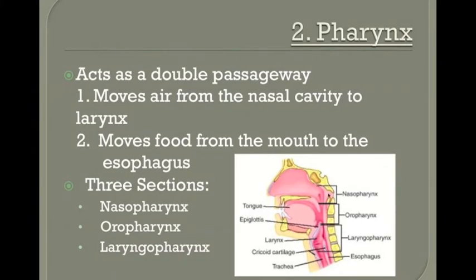The pharynx, if you look at the picture here on the bottom, is broken into three sections — and this is basic med term. Here's the nasopharynx, with 'naso' referring to the area behind the nose. Below that is the oropharynx, referring to the area of the mouth or the oral cavity. And just below that is the area called the laryngopharynx.